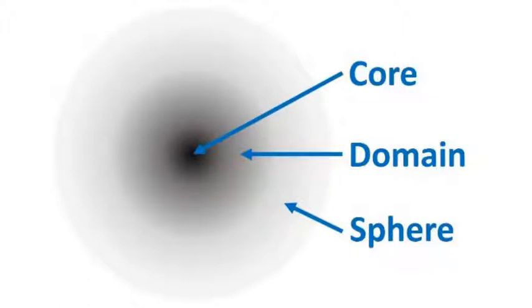Whenever we describe a cultural region, we absolutely have to think about this whole core, domain, sphere idea. Core, domain, sphere — I didn't come up with the names, but when we think about talking like a geographer, when we refer to regions, that's just how we talk. We have these core areas, these dominated areas where that cultural form is most present. But as you go away from that core area, it definitely starts to diminish and fade away. Let's look at some specific examples of cultural regions.